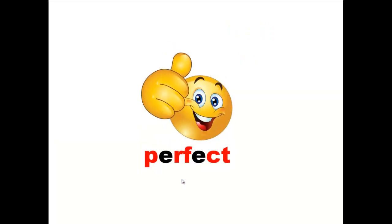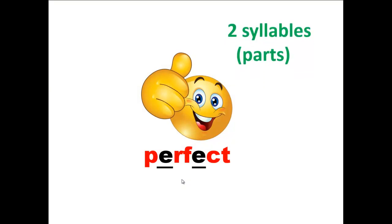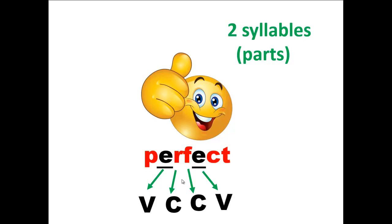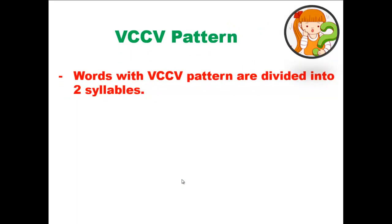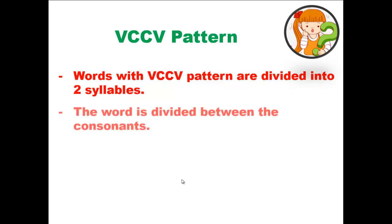Another example: perfect. We do have two vowel sounds, so the word is made up of two syllables. The pattern is: first vowel sound, consonant, consonant, and a vowel sound — the VCCV pattern. You divide the words between the consonants. By knowing the division, you are able to pronounce it: perfect. Words with VCCV pattern are divided into two syllables, and the word is divided between the consonants.